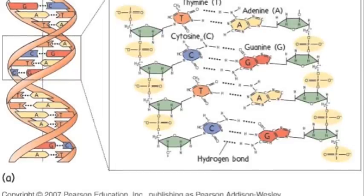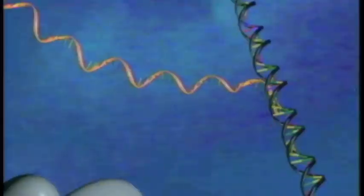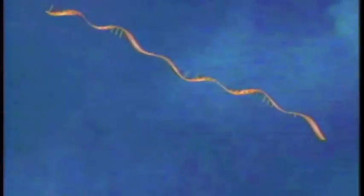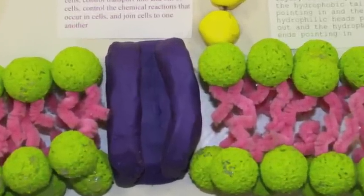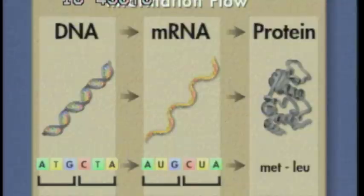So DNA is the information. This then gets turned into a message. We'll call this mRNA. That then gets turned into the product which is in fact a protein. So it's information to message to product. DNA to mRNA to protein.